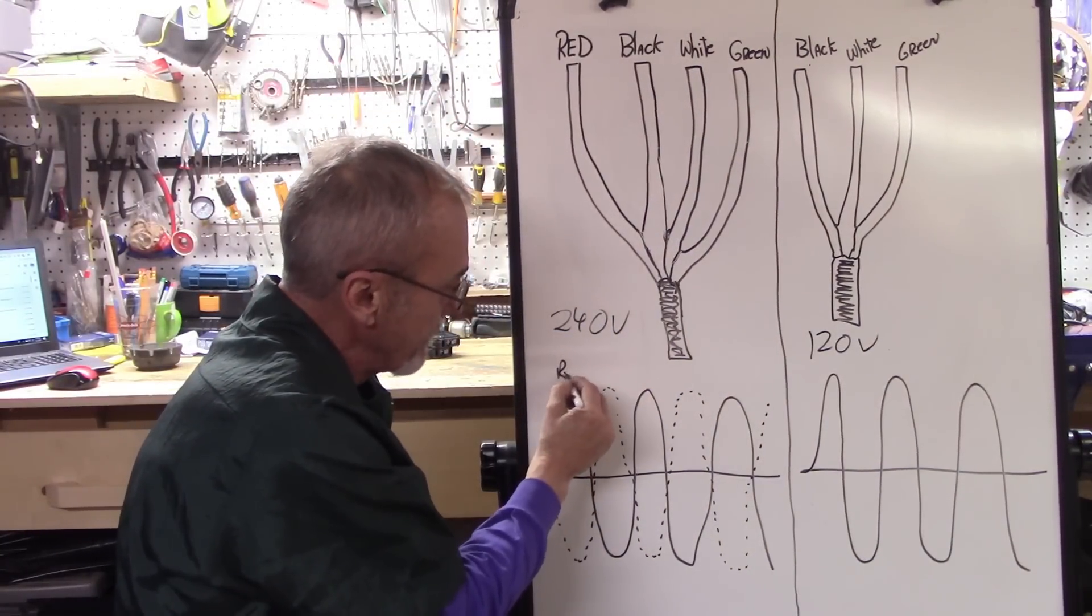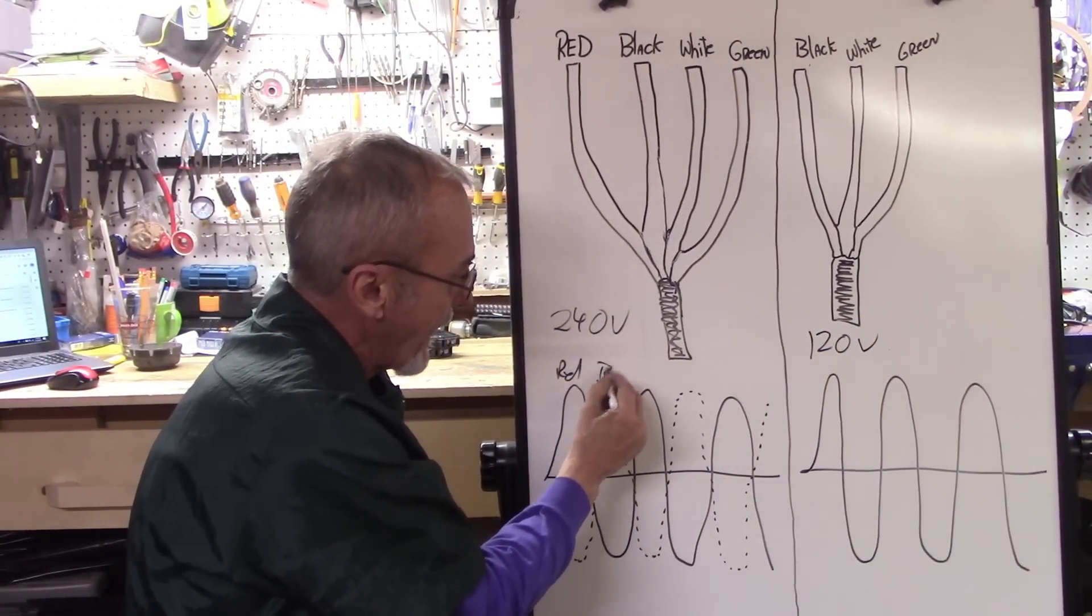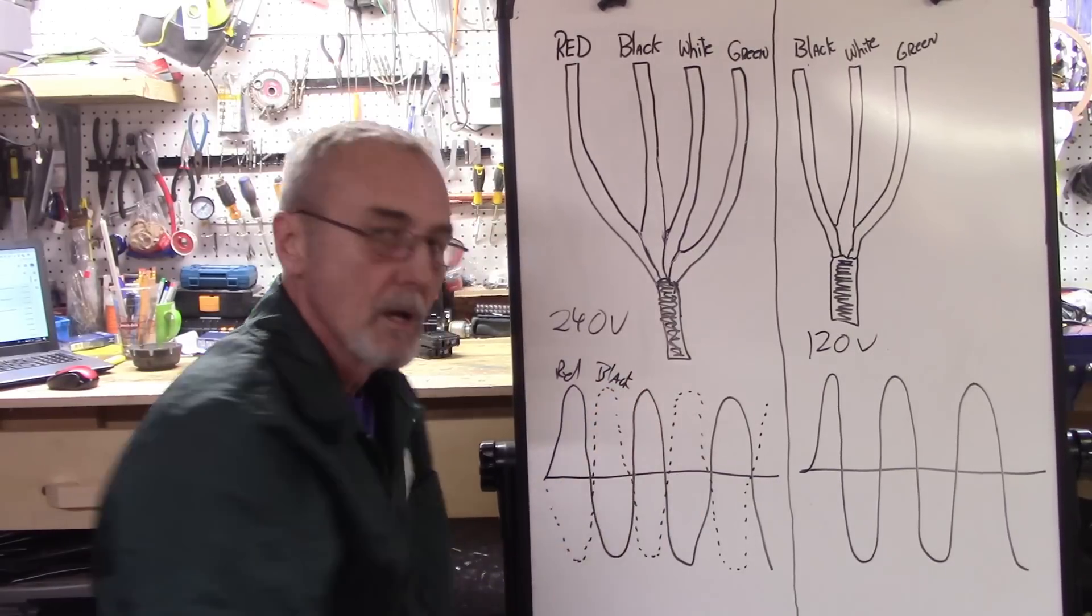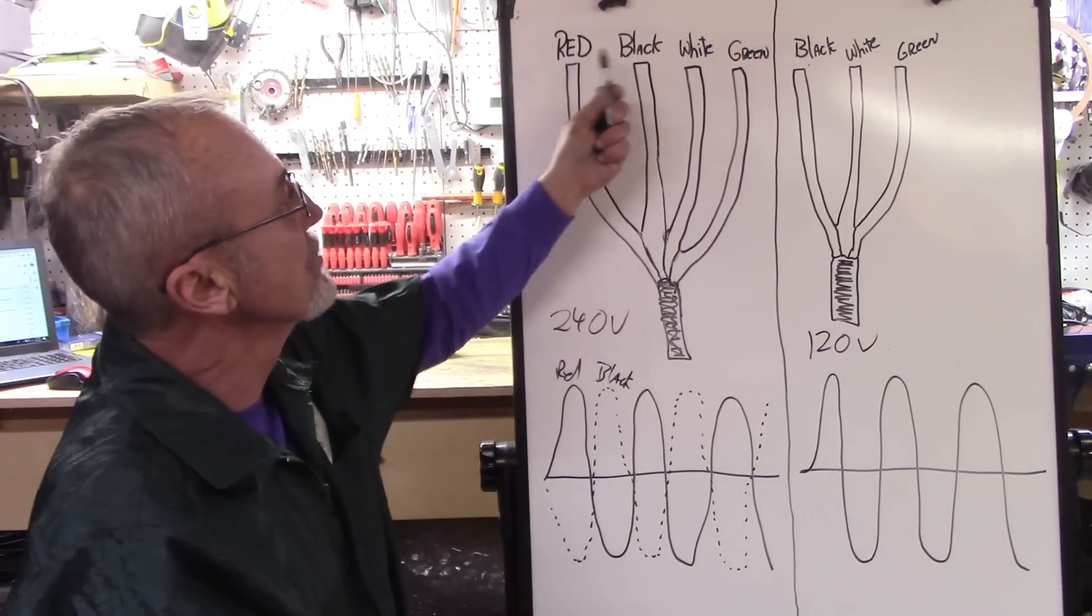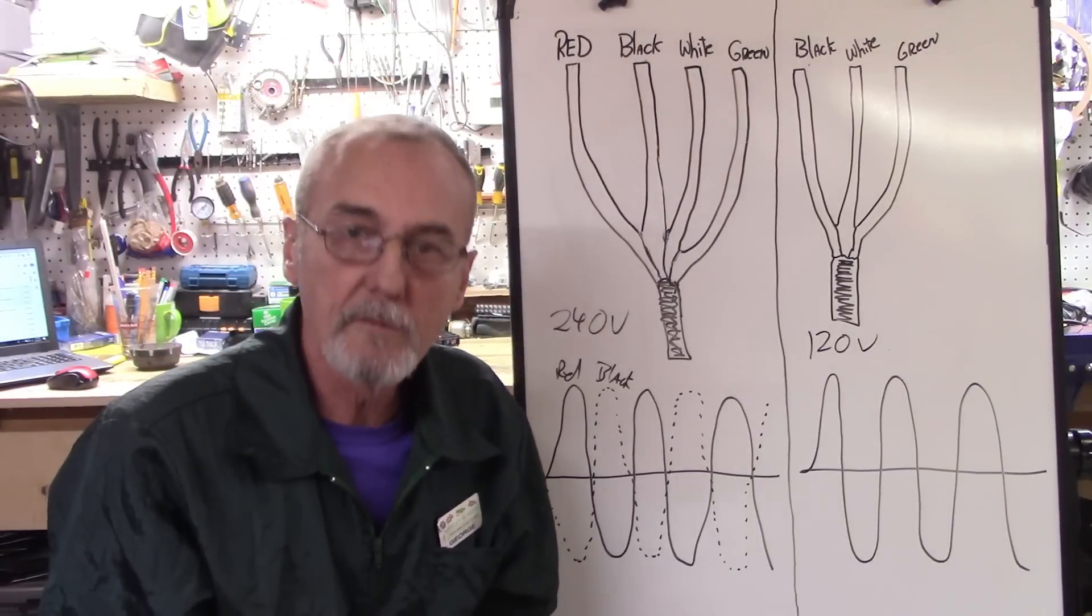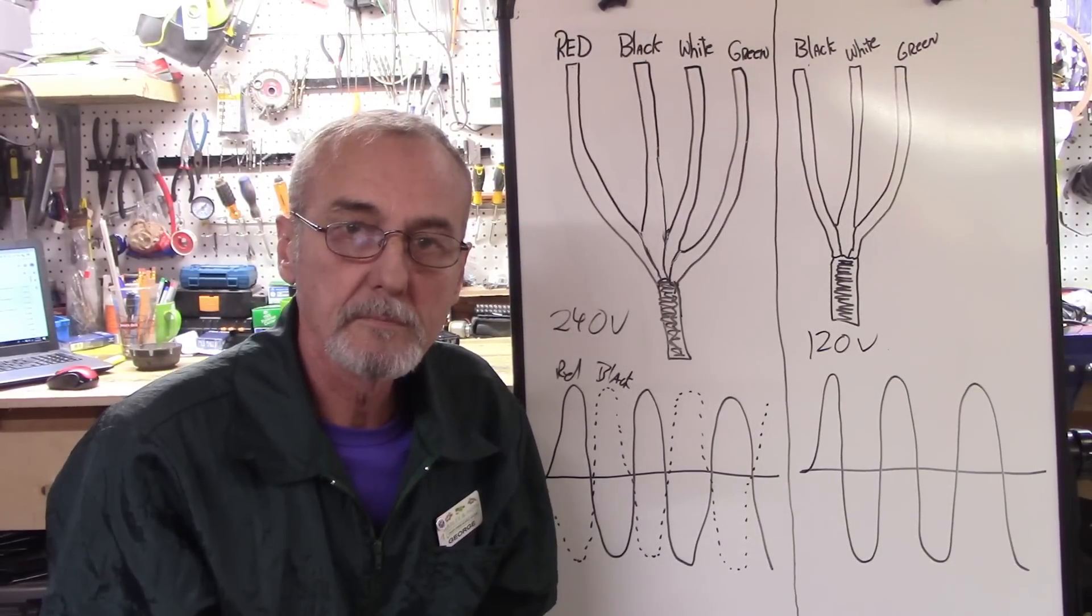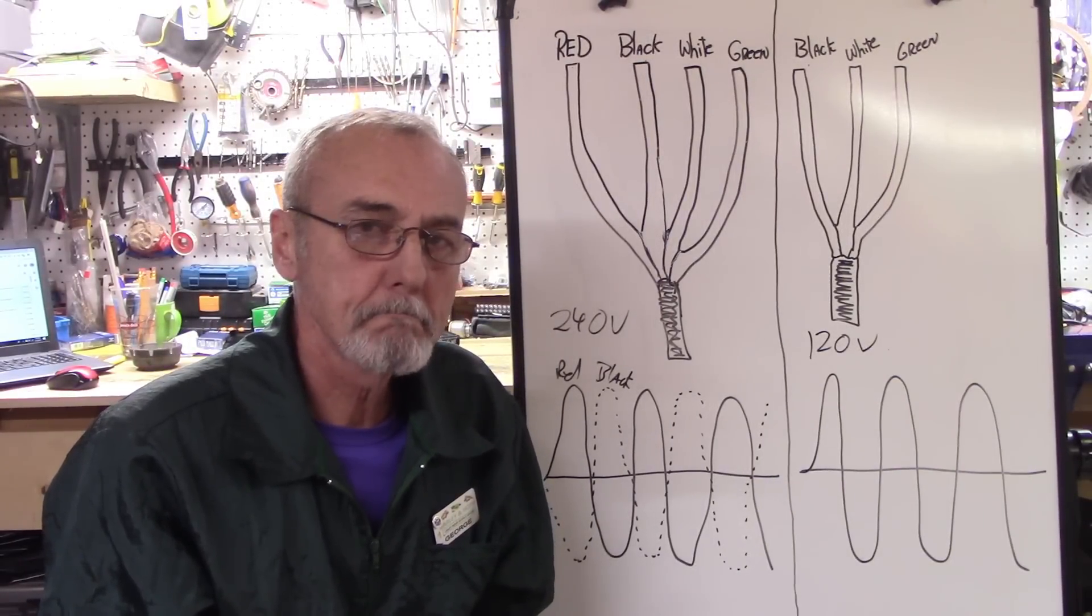So here you've got a red and a black. Lo and behold, if you use these two wires, you'll have 240 volts. Make sense?